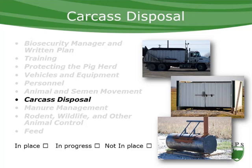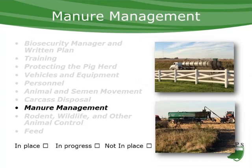Discussions around manure management also need to occur at the state level. The Secure Pork Supply Plan states that producers need a plan on how to store manure on-site if it cannot be permitted to move off-site during an outbreak. Manure movement must be a permitted movement under a movement permit. Manure must also be stored and removed in a manner that prevents exposure of susceptible animals and must meet state, local, and regulatory officials' requirements.